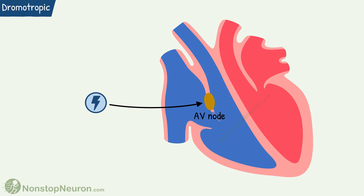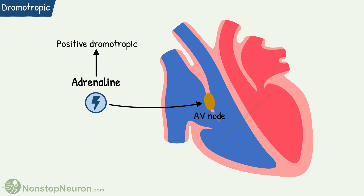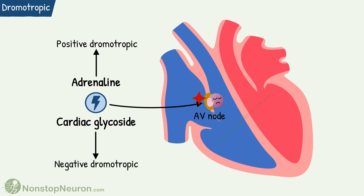Dromotropic effects are produced by acting on the AV node. For example, adrenaline increases the velocity of conduction through the AV node, thus it produces positive dromotropic action. And cardiac glycosides decrease the velocity of conduction — in other words, they have negative dromotropic action. So these were the dromotropic actions.